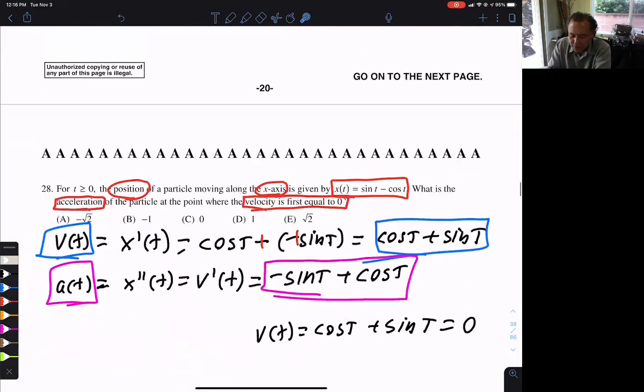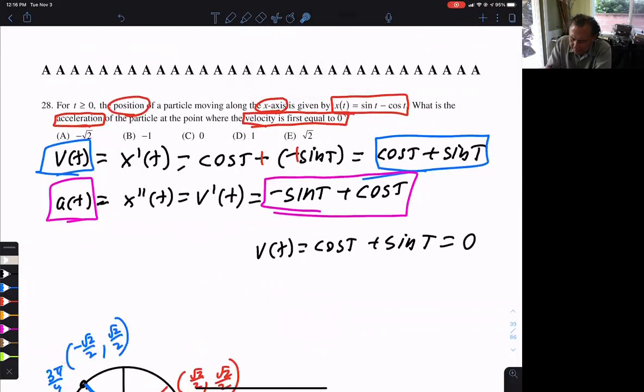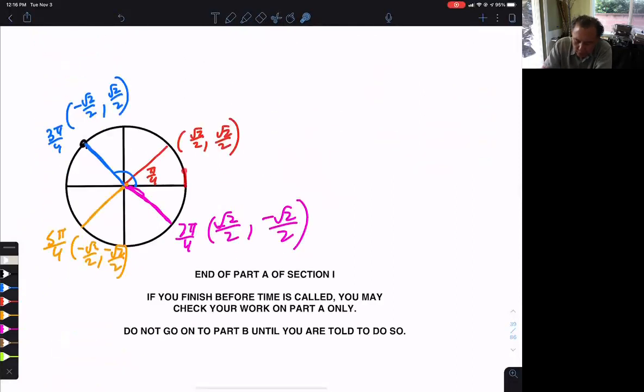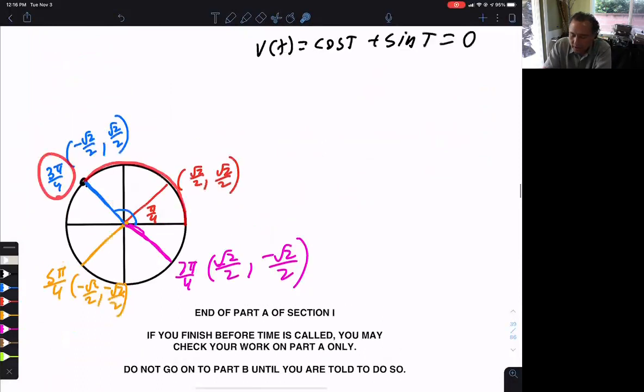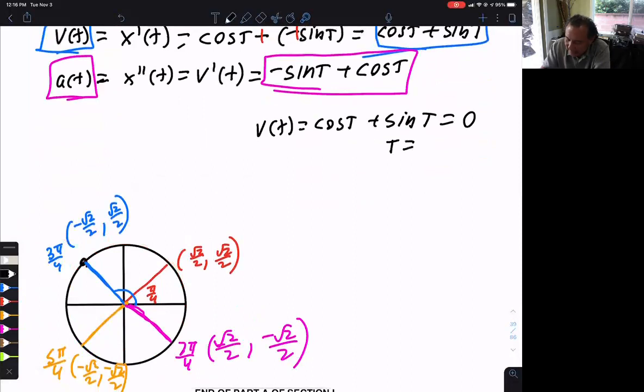Well, let's read the question. It says first equal to zero. Time starts at zero. So we start at zero and we go around until we first equal zero at three pi over four. So this answer will be t equals three pi over four for the first time it equals zero.